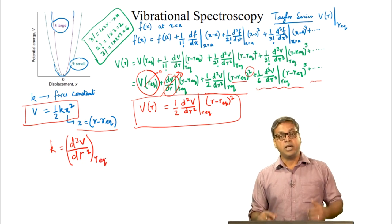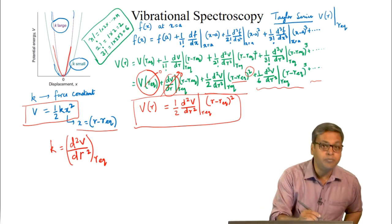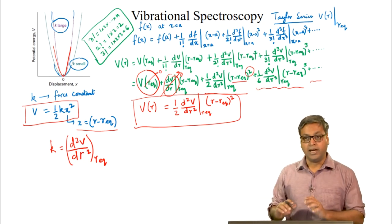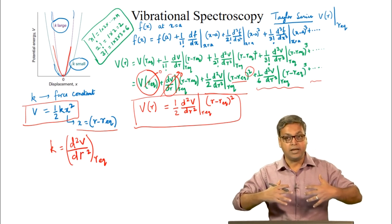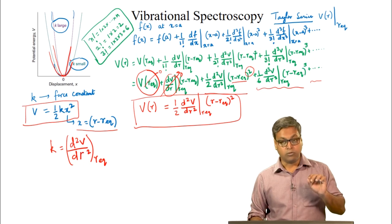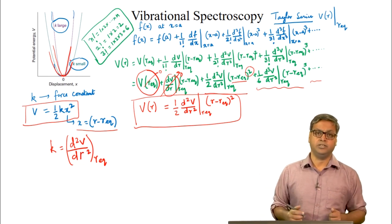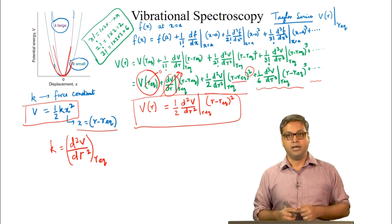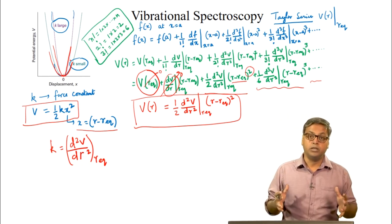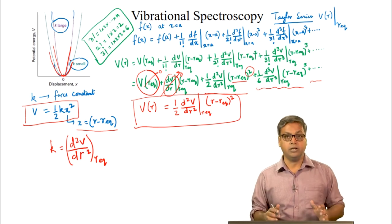In other words, if the potential energy is sharply curved at the minimum, k will be large. On the other hand, if the potential energy is wide and shallow around the minimum, k is small. So if we can calculate the potential energy at any bond length, we can determine the curvature and therefore calculate the force constant k and the vibrational frequency.